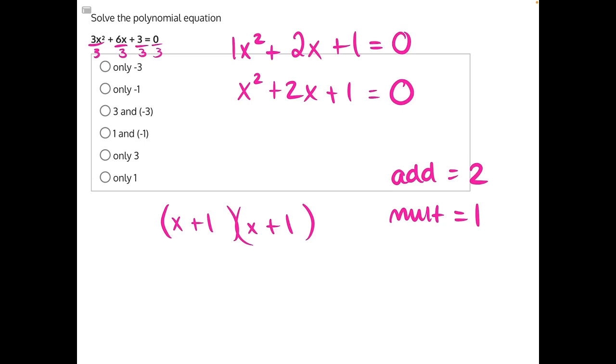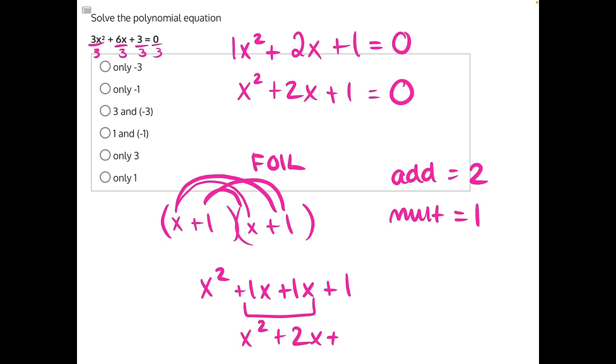If we were to multiply that out, we'd have front in our FOIL method. x times x would give us x squared. Outer would give us 1x. Inner would give us 1x. And last would give us plus 1. When we add these two 1x's together, we'll have x squared plus 2x plus 1, which does match our original equation.